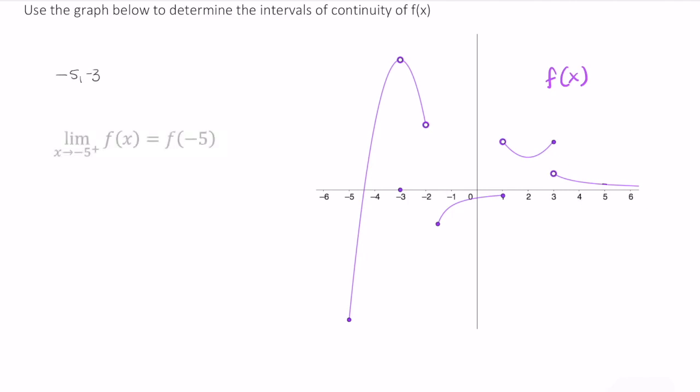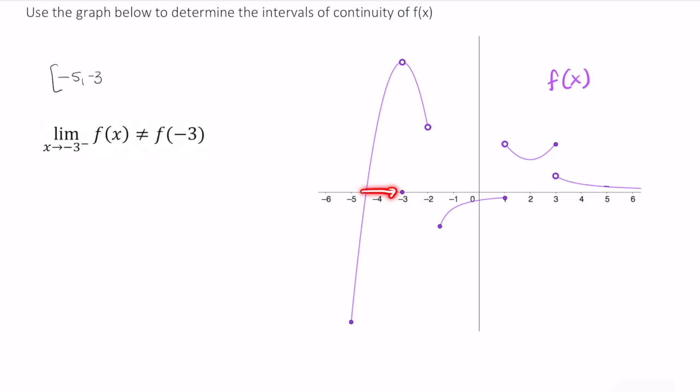Furthermore, as we approach negative 5 from the right, the limit of f of x equals f evaluated at negative 5. And as we approach negative 3 from the left, the limit of f of x as we approach negative 3 from the left does not equal f evaluated at negative 3. Okay, so that's our first interval of continuity.